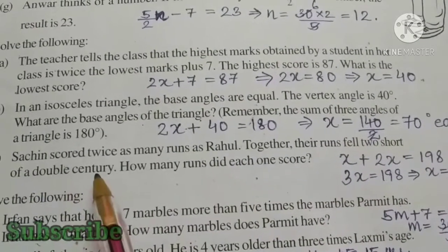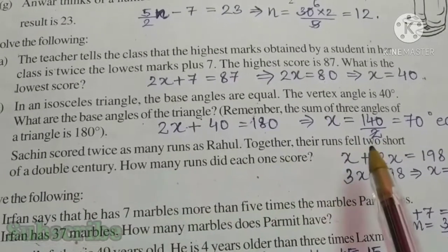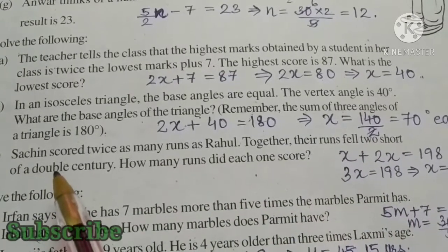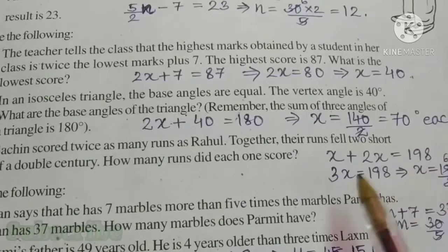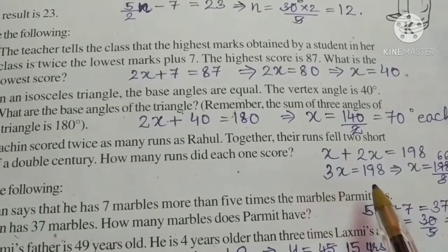Because double century is 200, so 200 minus 2 is 198. We get 3x is equal to 198.